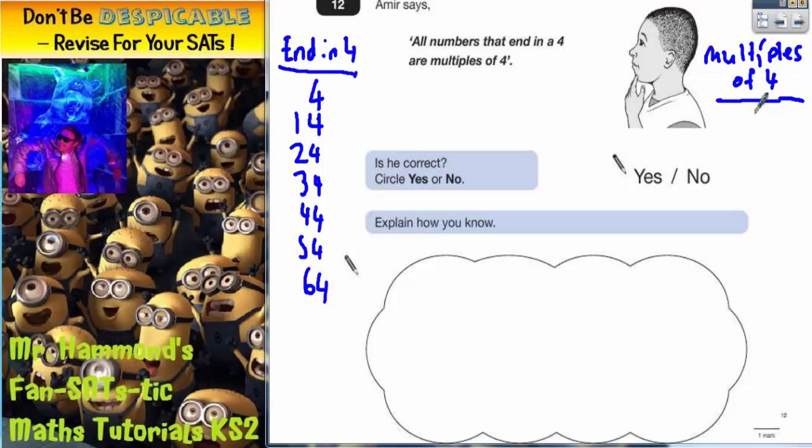Multiples of 4 go: 4, 8, 12, 16, 20, 24, 28, 32, 36, 40.